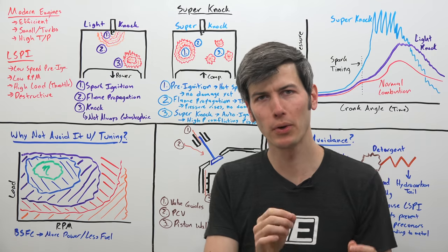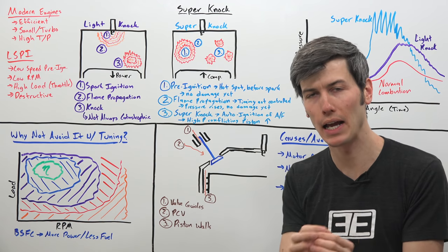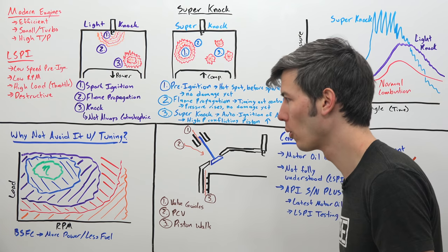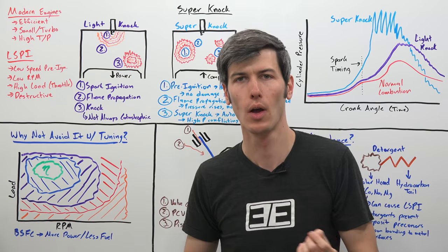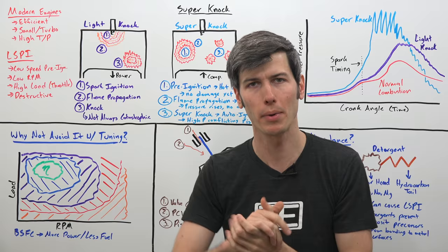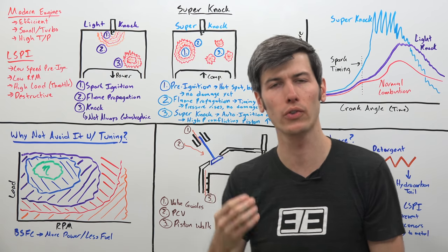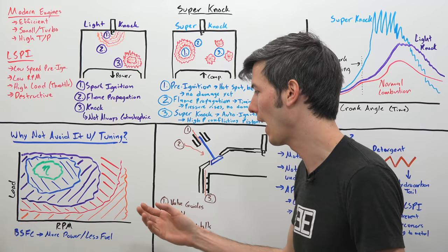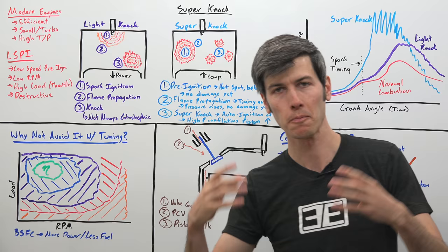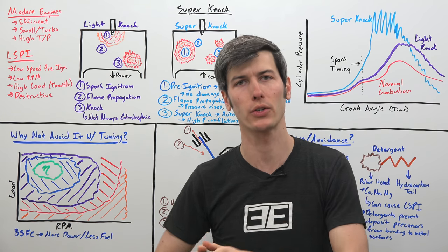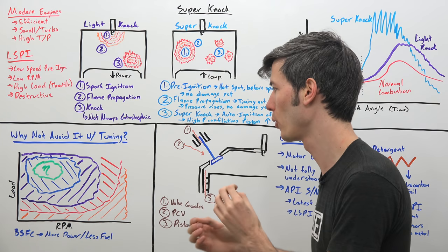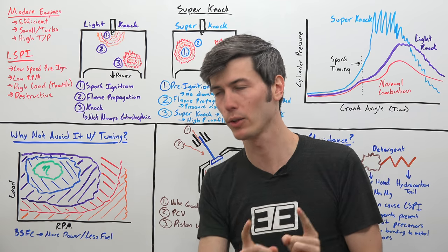Now, if we know that super knock as a result of LSPI is most likely to occur at low engine speeds and high engine loads, well then why don't we just tune that out of the system? Why don't we just say, modern engines generally speaking are all using electronic throttle bodies, so why don't we just reduce the amount of throttle that you can possibly give to an engine at lower RPM? That way, you don't have to run into these high load, low RPM scenarios. And in fact, that is done by manufacturers, and they will tune that low RPM so that they minimize load in order to prevent LSPI from occurring. But that's a bad solution.